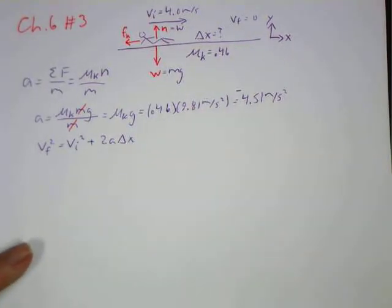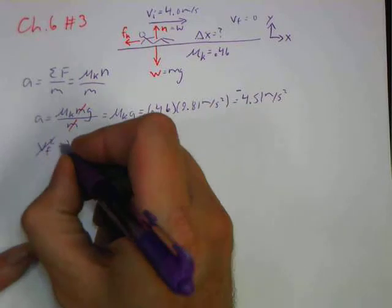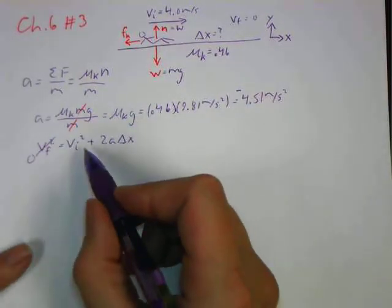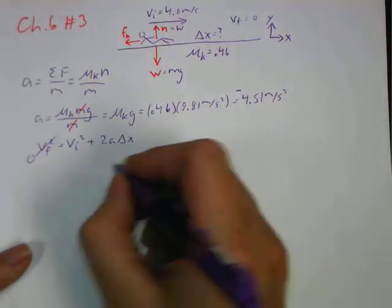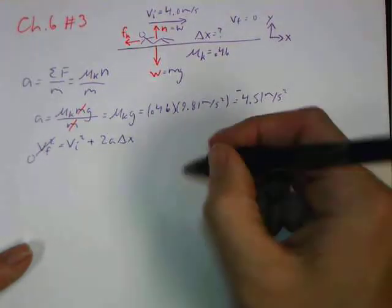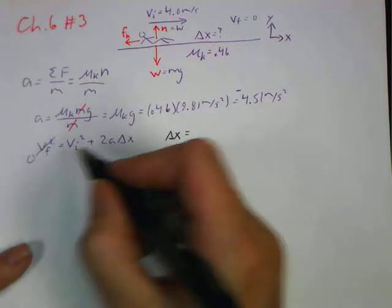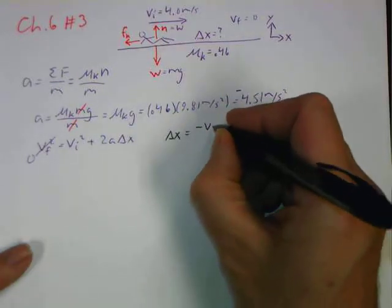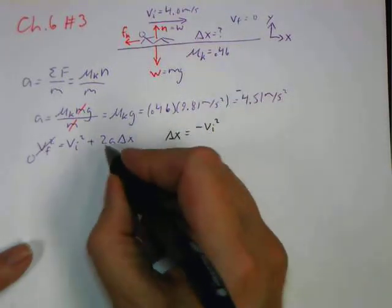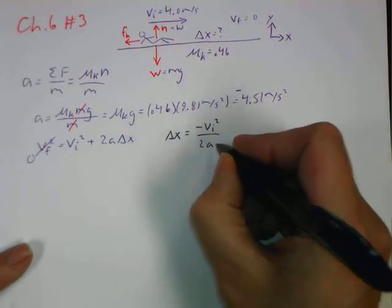We are solving for our displacement plus we know that our final velocity is actually equal to 0. So we're going to subtract our v initial squared over there. So we end up with our formula for delta x being negative v initial squared divided by 2 times our acceleration.